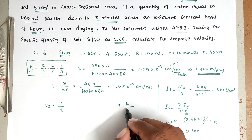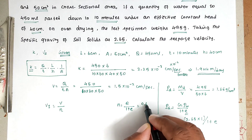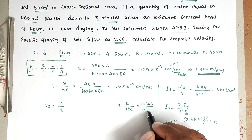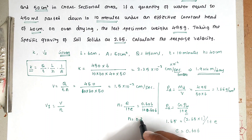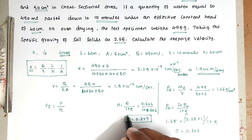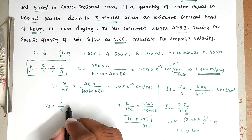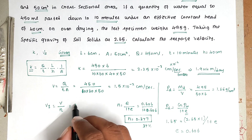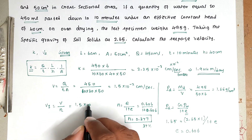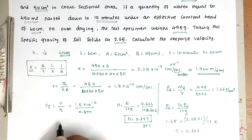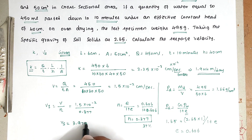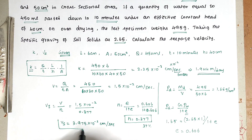From the void ratio, we find porosity: n = e / (1 + e) = 0.606 / (1 + 0.606) = 0.377, which is 37%. Now substituting into the seepage velocity formula: Vs = 1.5 × 10⁻² divided by 0.377 = 3.975 × 10⁻² centimeters per second.